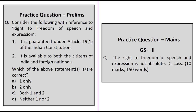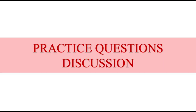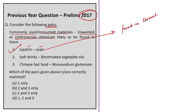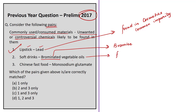Moving on to the practice questions discussion session. The first question is a previous question from 2017. Pairs of commonly used or consumed materials and the unwanted or controversial chemicals likely to be found in them are given. We must choose the correct pair. The first pair is lipstick–lead: this is correct because lead is a common impurity found in cosmetic lip products such as lipsticks and in other cosmetics like eye shadows, blushes, shampoos, and body lotions. The second pair is soft drinks–brominated vegetable oils: brominated vegetable oil is a food additive sometimes used to keep citrus flavoring from separating in some sodas and soft drinks. This food additive is banned in Europe and Japan.